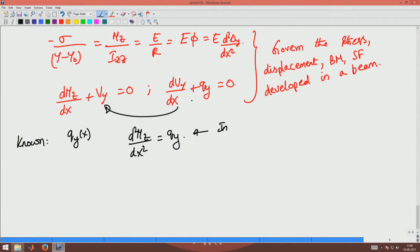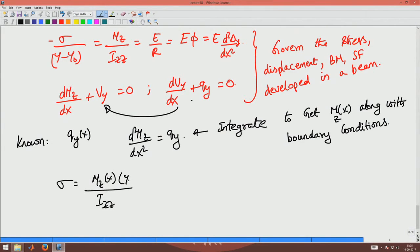You integrate this to get M(x), Mz(x), along with boundary conditions. Once you get Mz(x), you go to the first equation, and what you do is you get the stress as Mz(x) divided by Izz into (y - y₀), with a negative sign that gives you σxx stress.